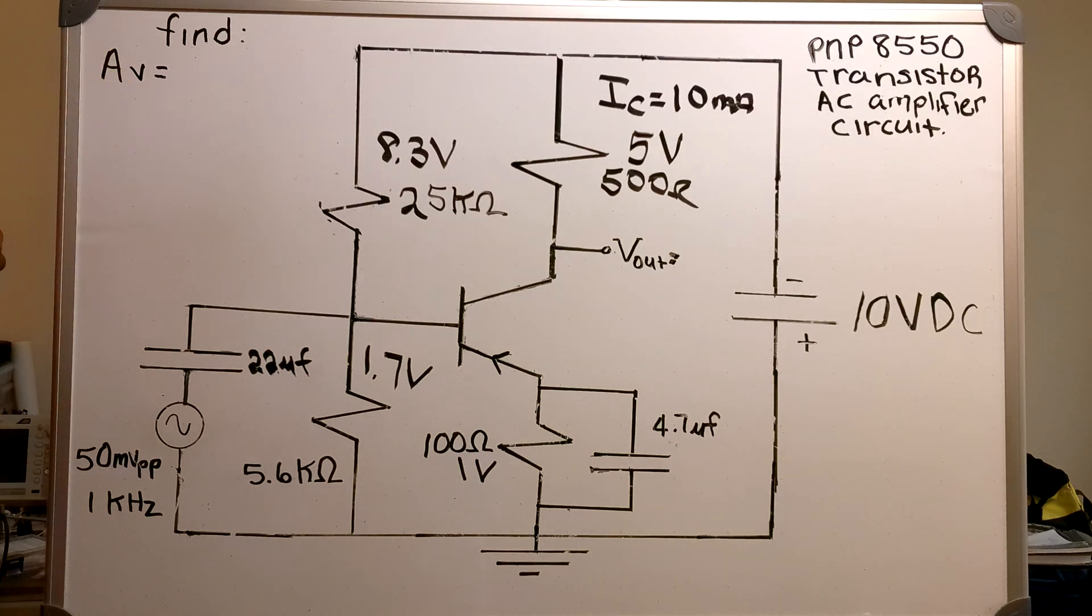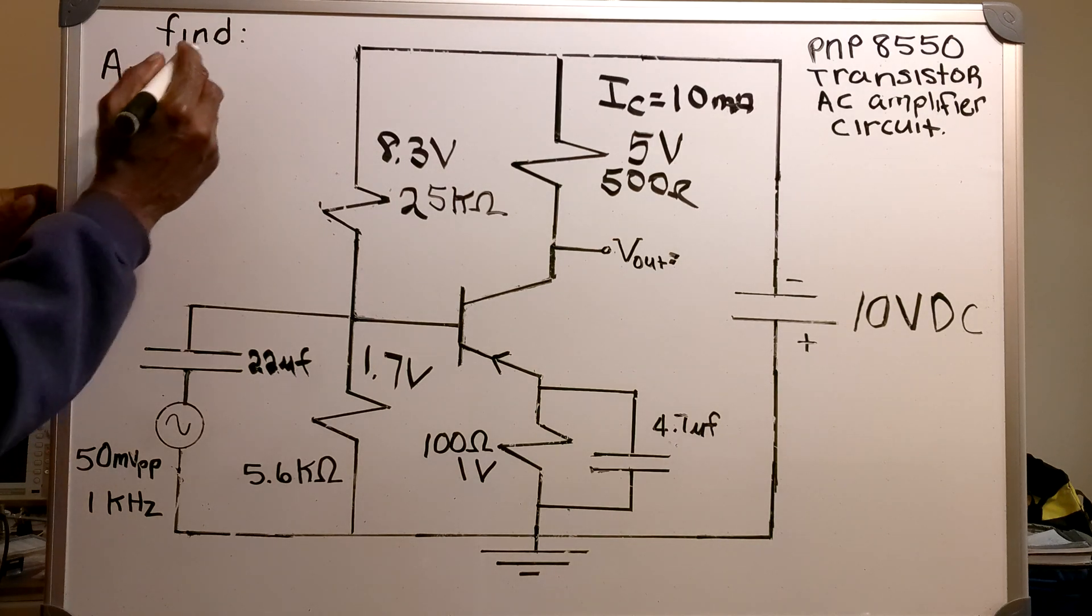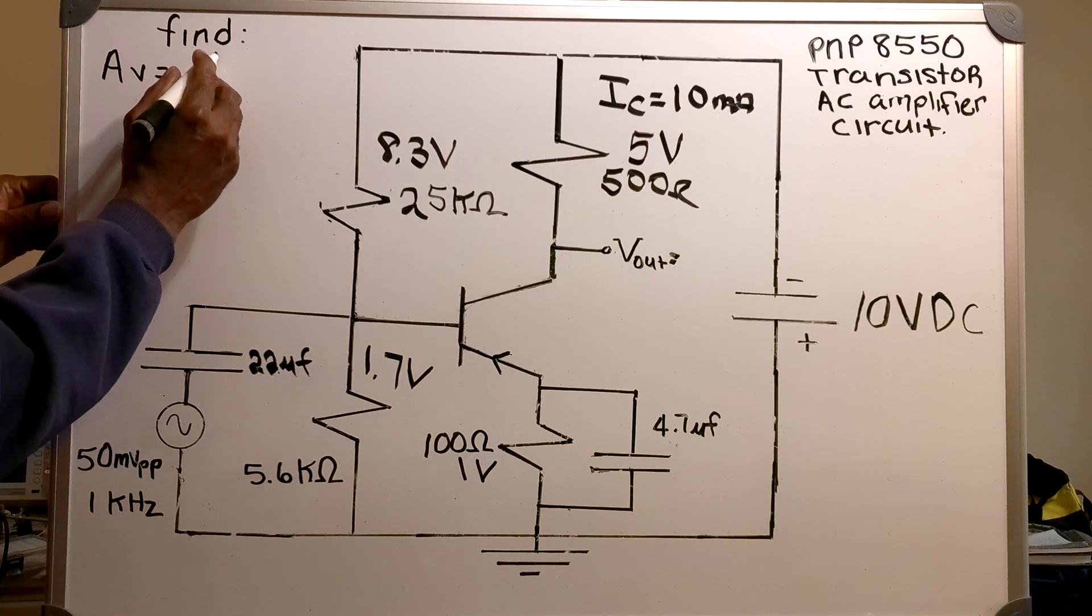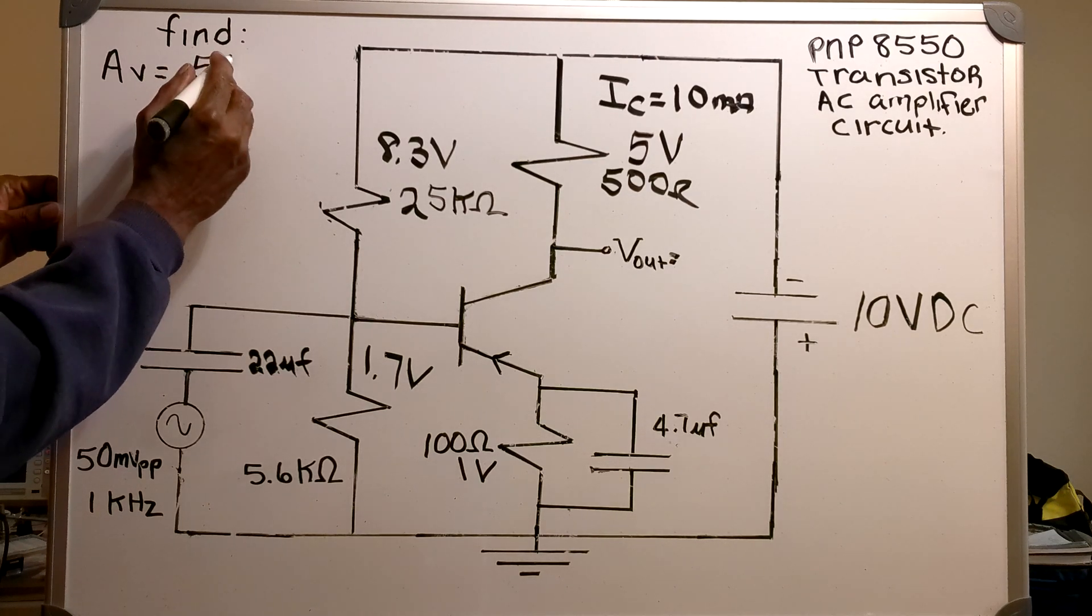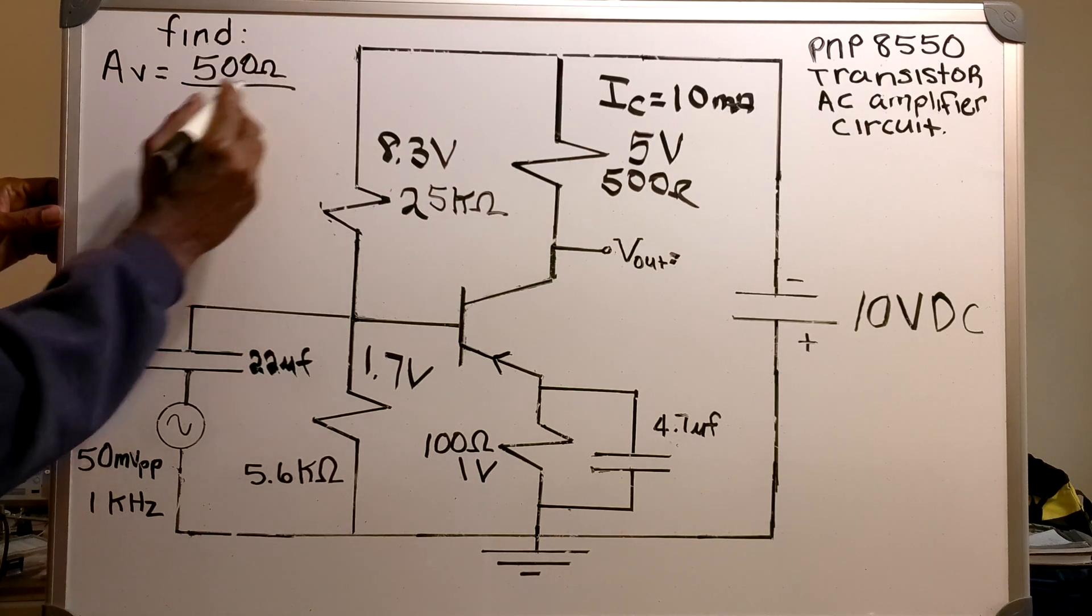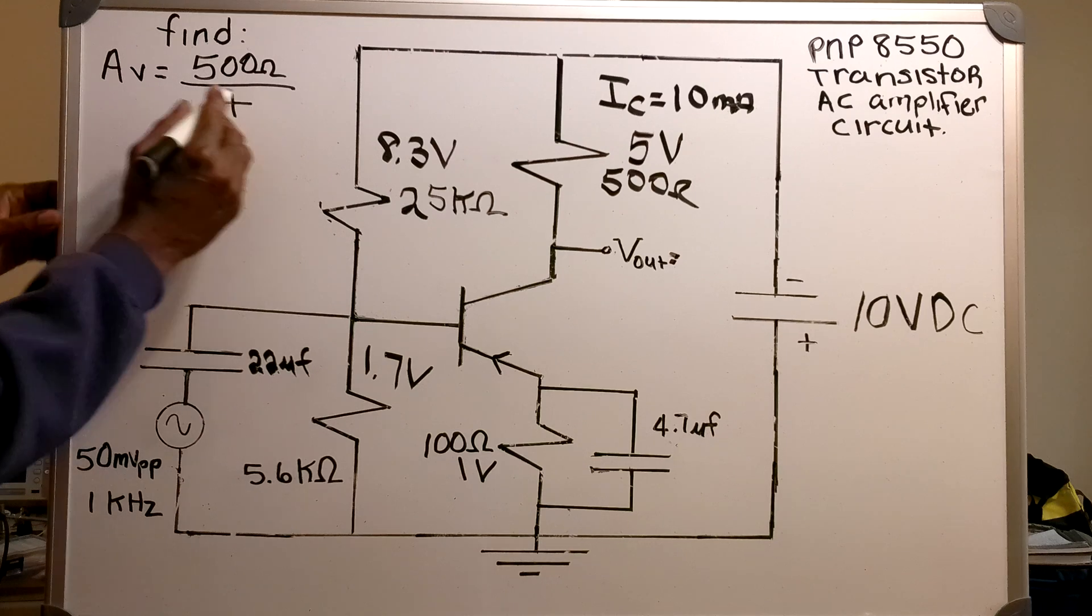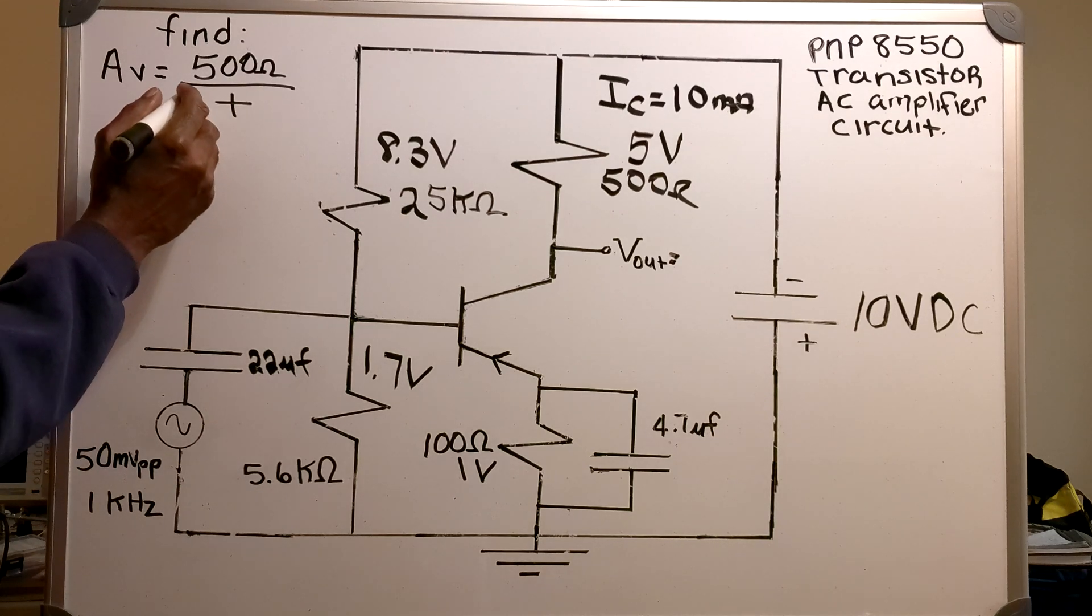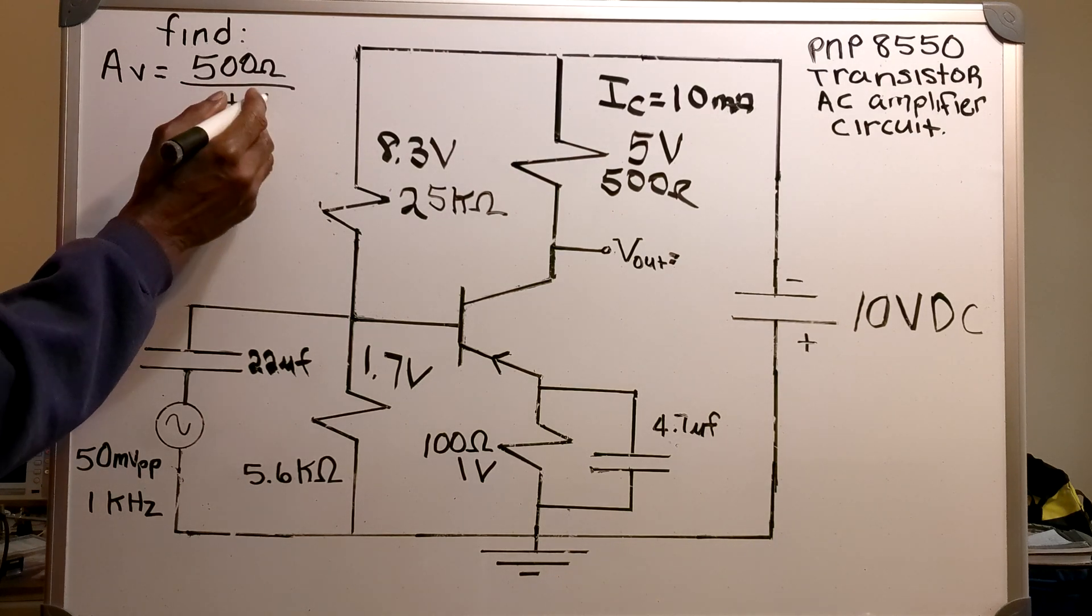Now, I will be finding the voltage gain. And the gain equals 500 ohms over something plus something else.